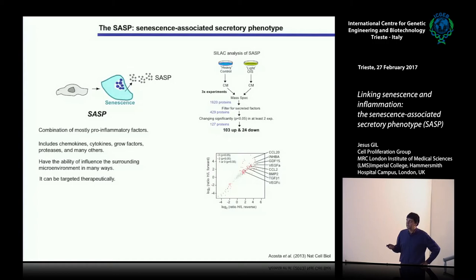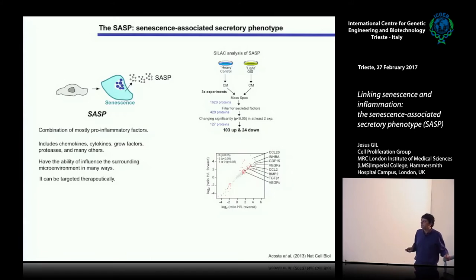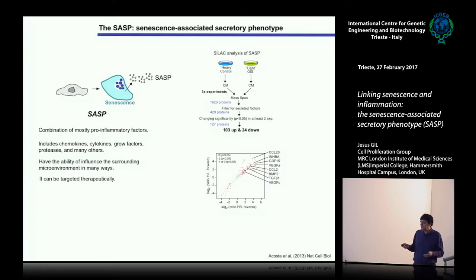We have been working in systems of oncogene-induced senescence, doing mass spectrometry to characterize and define factors secreted and upregulated in senescent cells. Amongst them are inflammatory factors like CCL2, CCL20, IL-8, and IL-6, but also factors of the TGF-beta and BMP family, vascular endothelial growth factors, and many others.